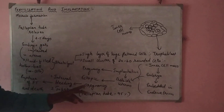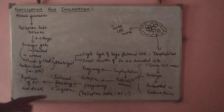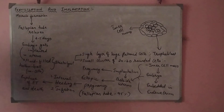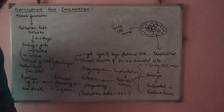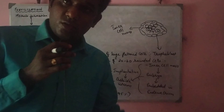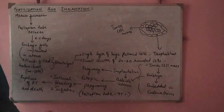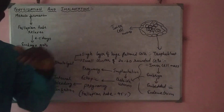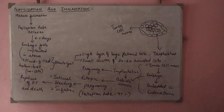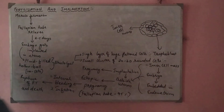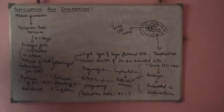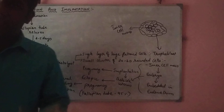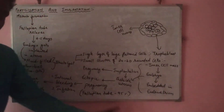Ectopic pregnancy is the process by which implantation happens somewhere outside the uterus. It can be in the fallopian tube, in the cervical cavity, or on the upper surface of the fundus. About 95% of ectopic pregnancies happen only in the fallopian tube.